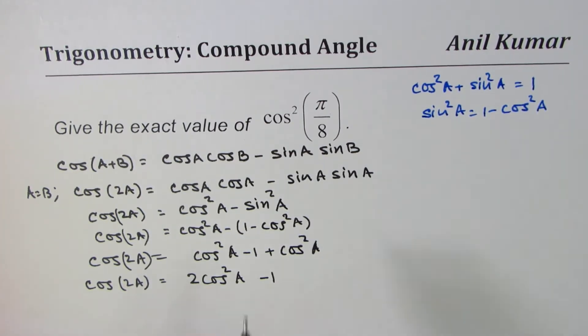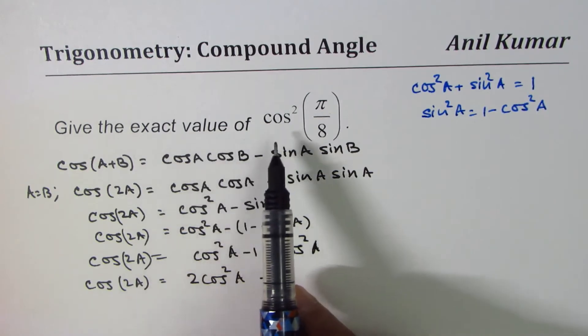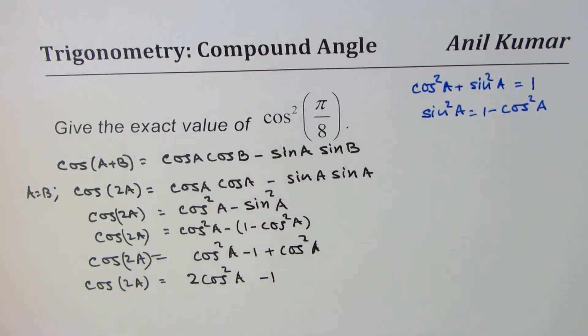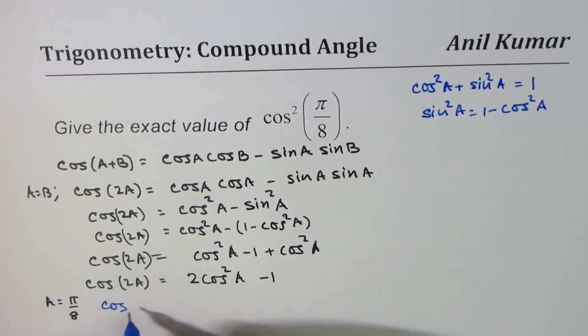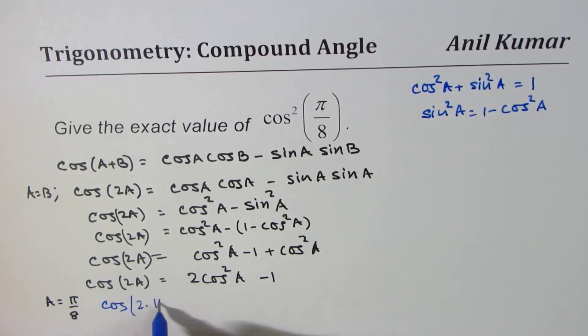Which we are going to use to find the exact value of cos²(π/8). So if I replace A with π/8, then what happens? Then we get cos(2 × π/8) equals 2cos²(π/8) minus 1. Do you see that?